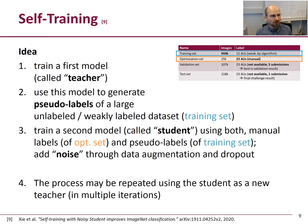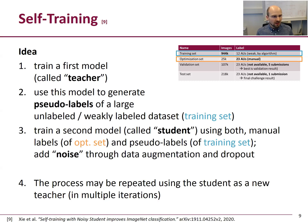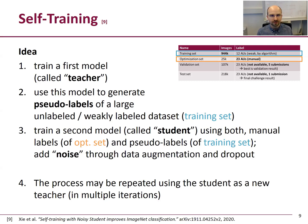The second key concept is self-training. We train a first model called the teacher, and use it to generate pseudolabels for the large weakly labeled training set. Then we train a second model called the student using both the manual labels of the optimization set and the pseudolabels of the training set. We also add noise using data augmentation and dropout. The self-training process may be repeated, using the student of one iteration as the new teacher in the next.